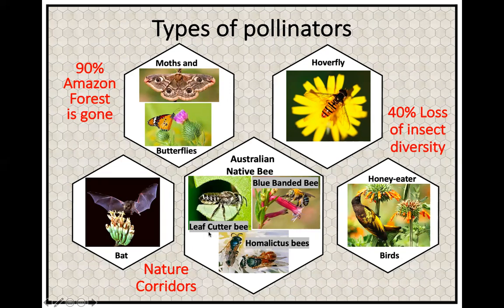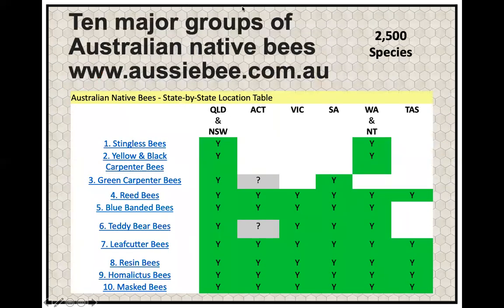Here are three of our most popular native bees in Australia, including down in the southern states: a leaf-cutter bee, a blue-banded bee, and the homoelictus bee, which are quite tiny. There's a really good website called AussieBee.com.au if you want to look up more about Australian bees. We currently have around 2,500 species of bees in Australia alone.